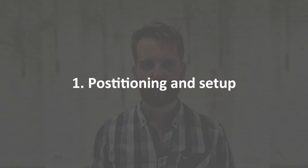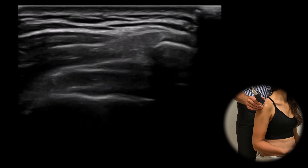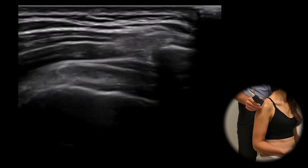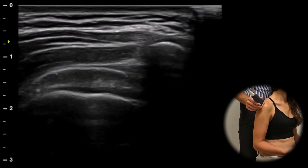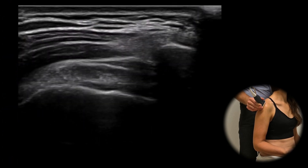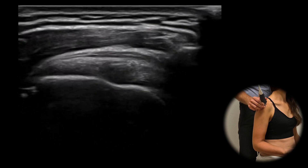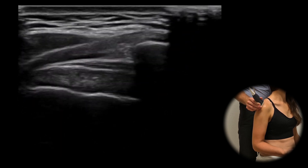Positioning and setup. For this exam the patient is seated with the elbow slightly flexed. To capture the best image we will position the ultrasound probe between the acromion and humerus, aligning it along the long axis of the rotator cuff.